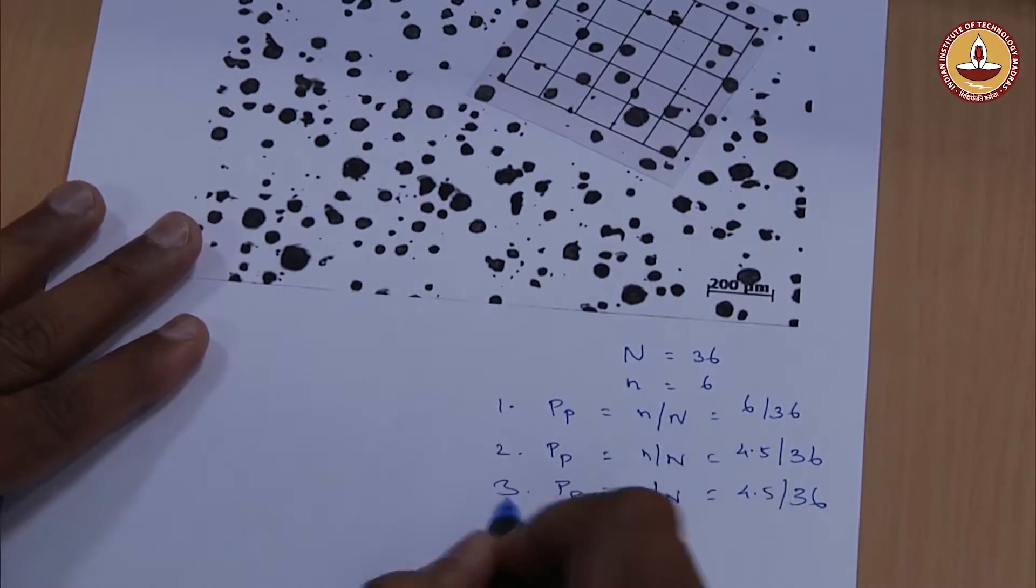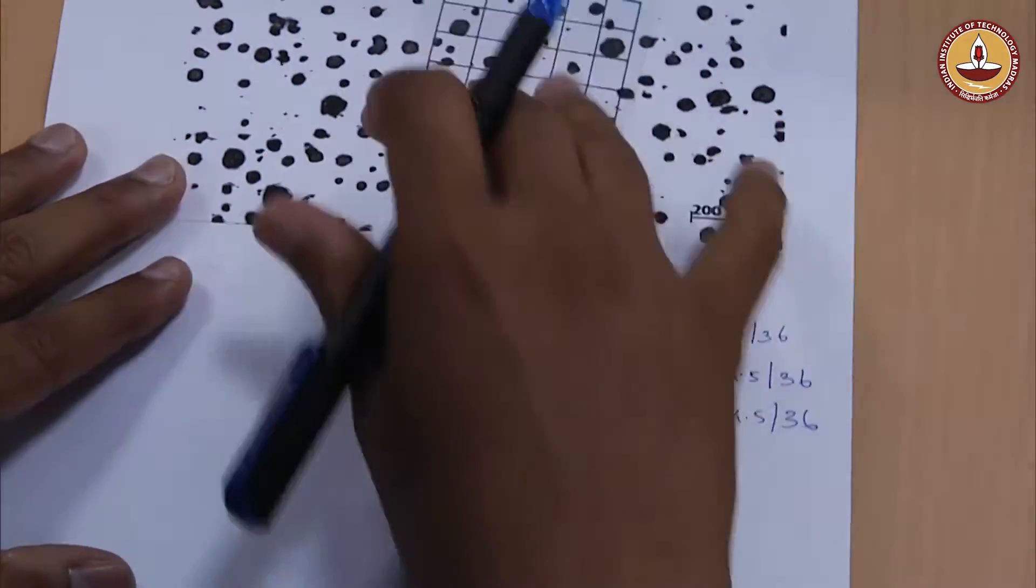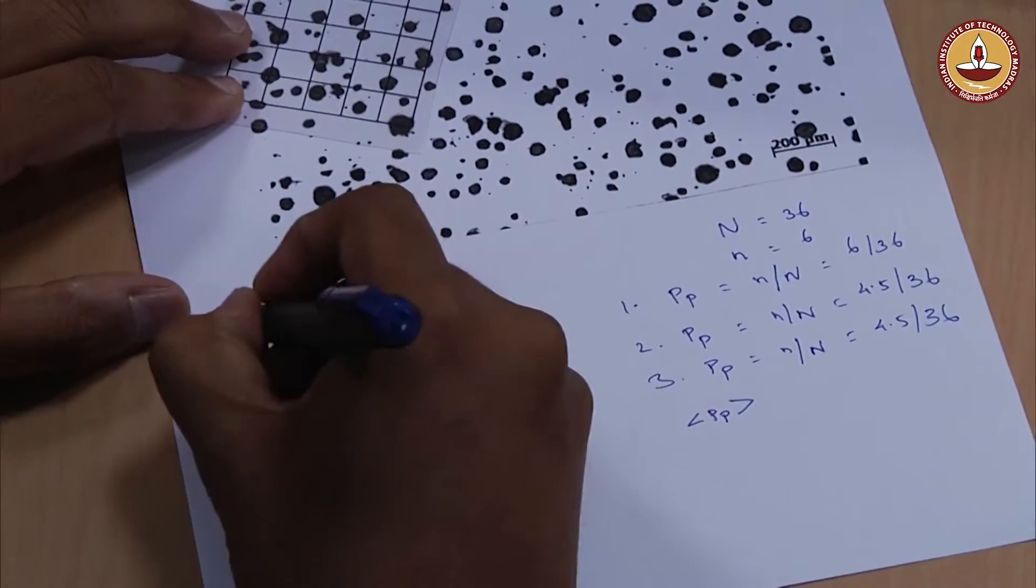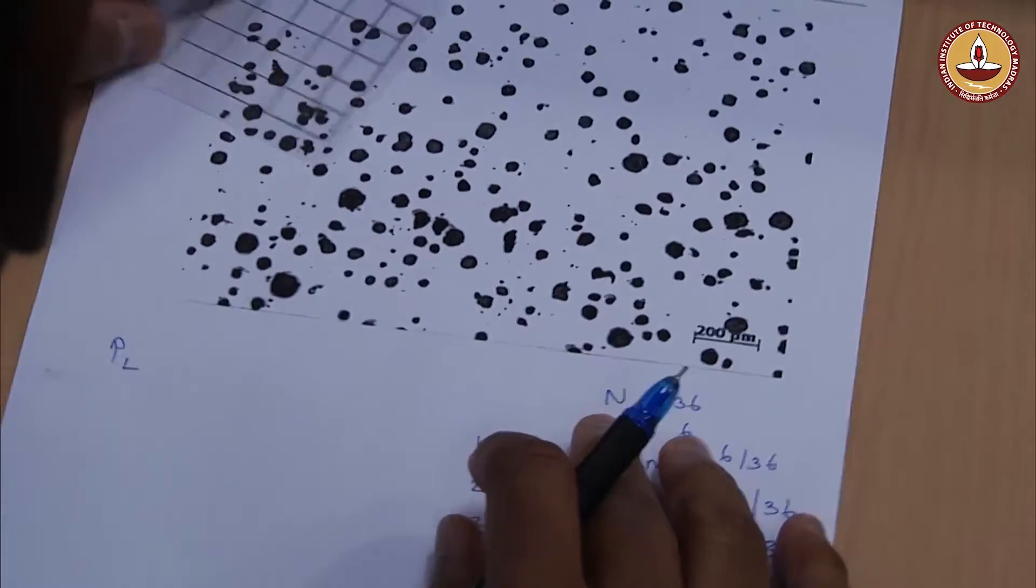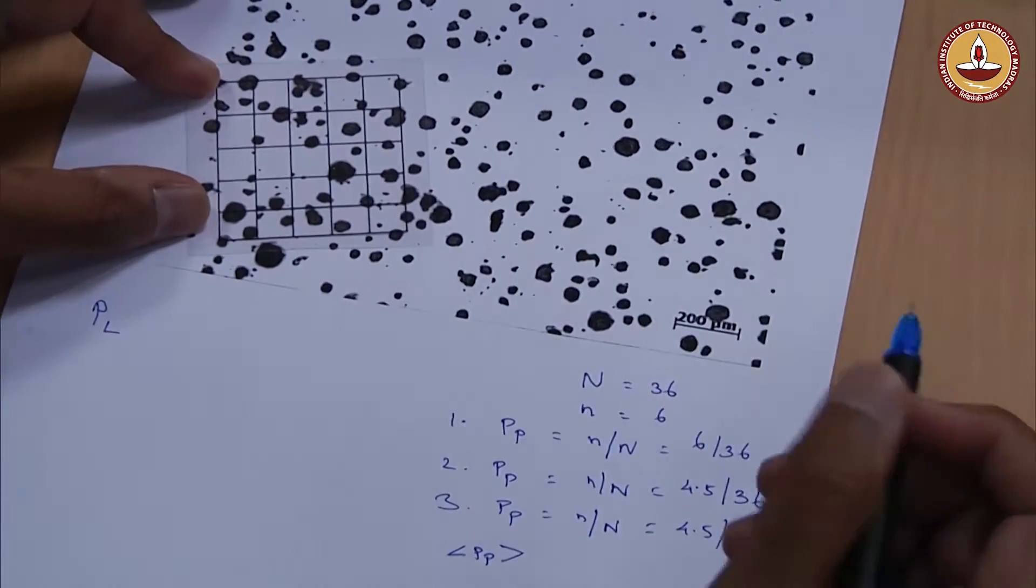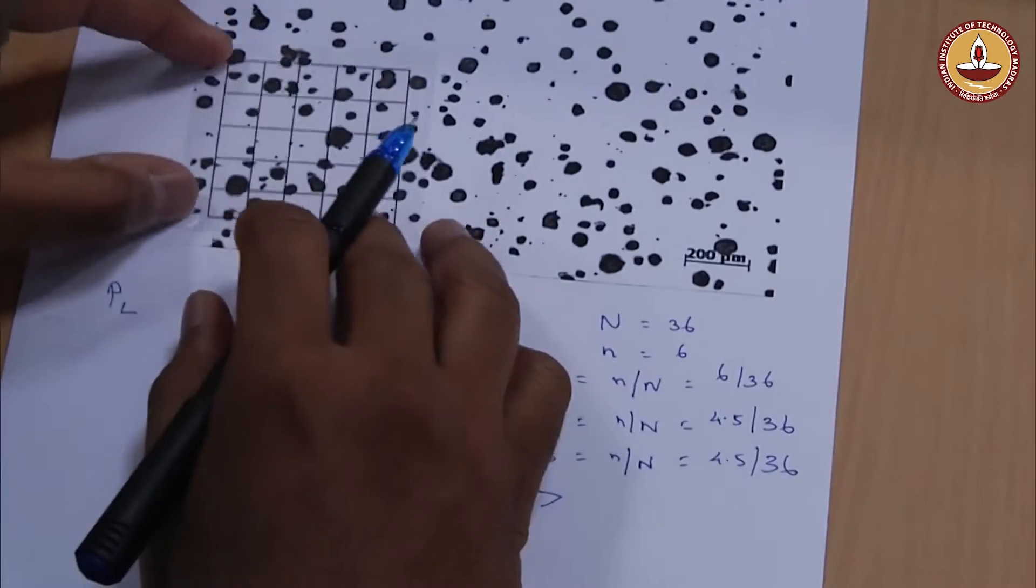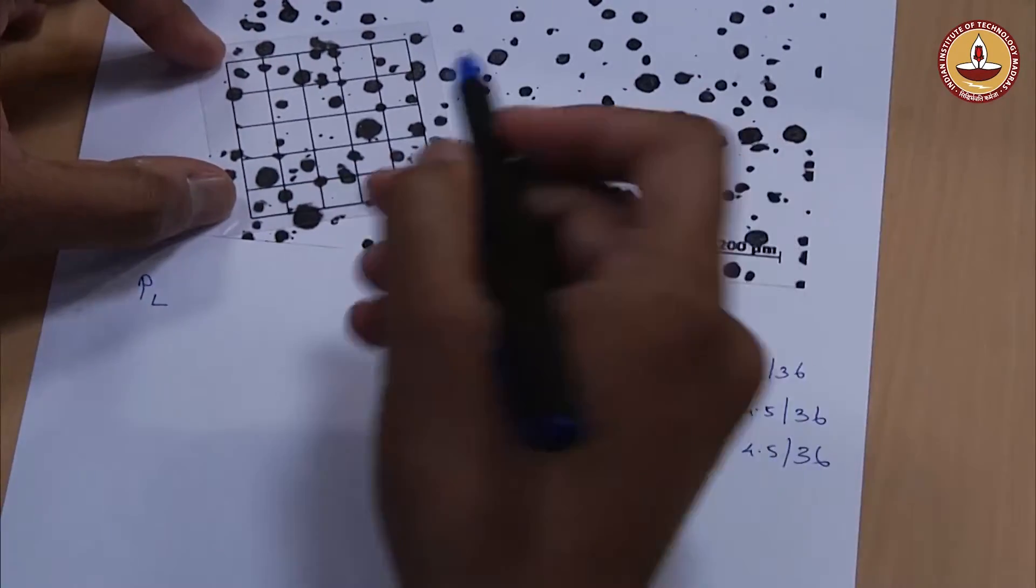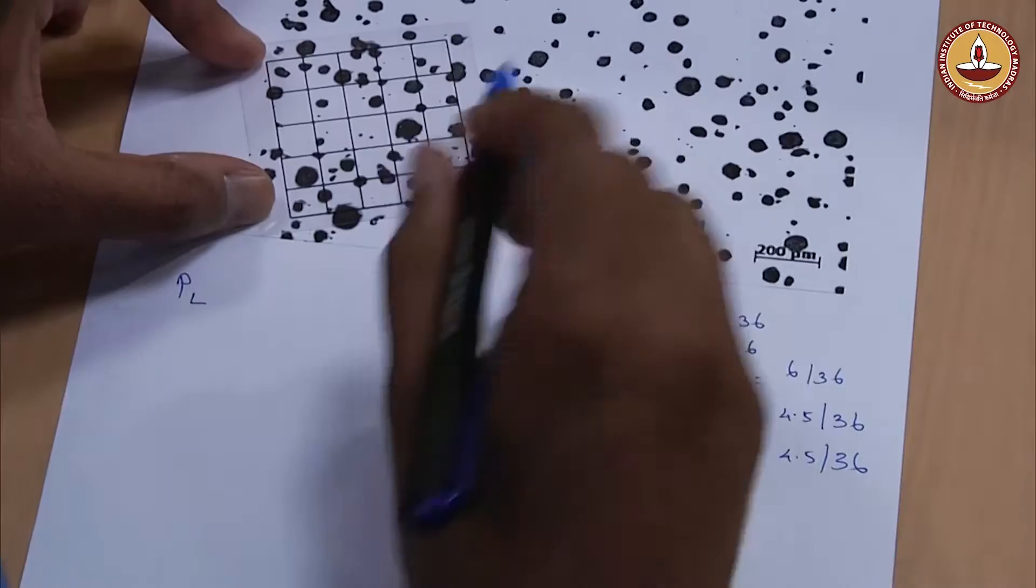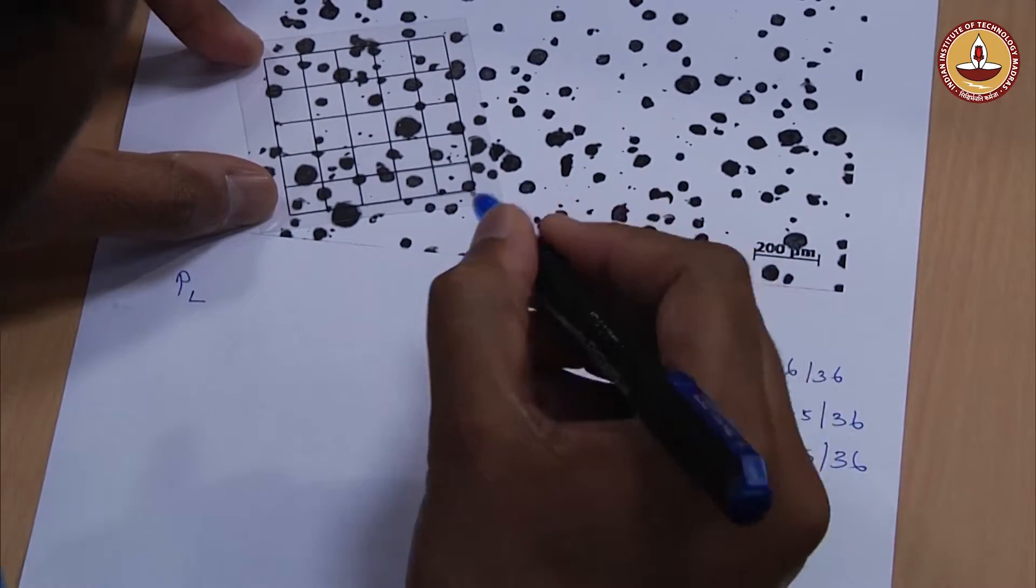What I will do is collect this data from the entire class and put it in the Excel sheet. Before I go to that, let me now demonstrate how I am going to measure the PL. Again I will put this grid into a random position and then start counting the intersection of the boundary of the particle. We will assume that the vertical lines are not there; we will use only the horizontal lines and let it fall on this microstructure.